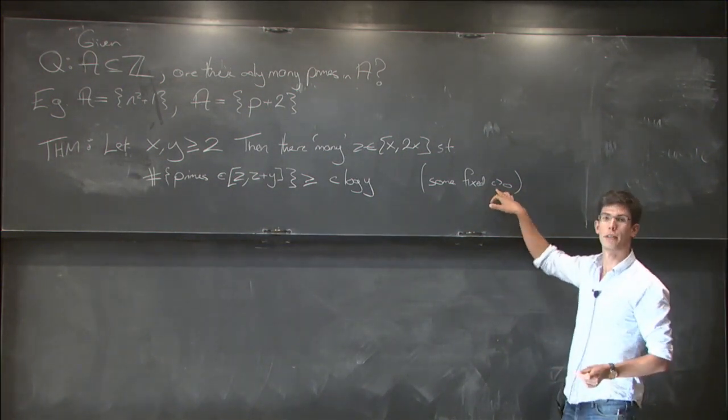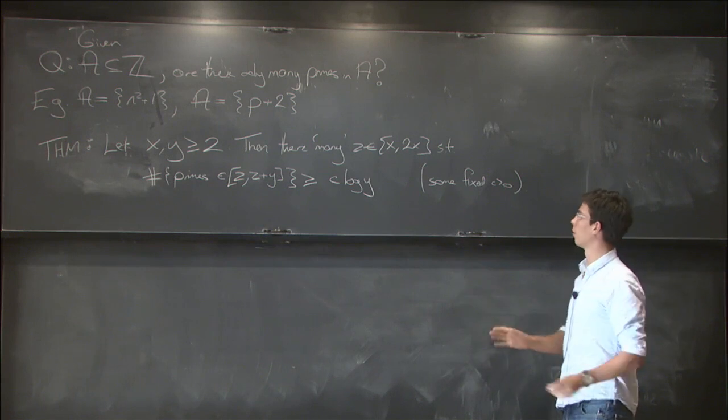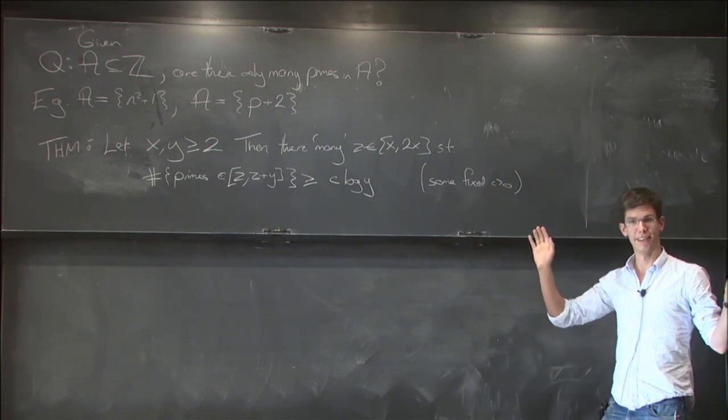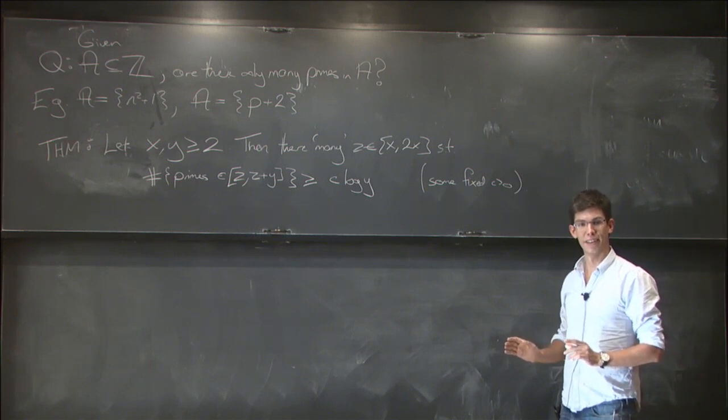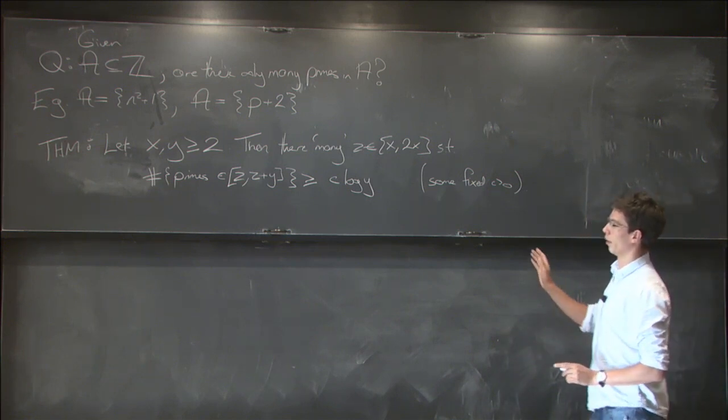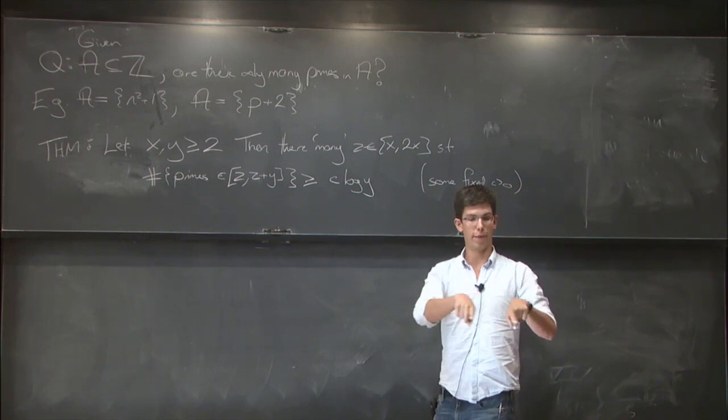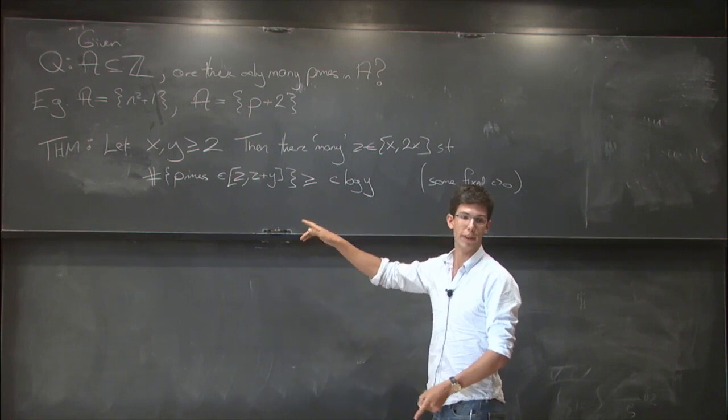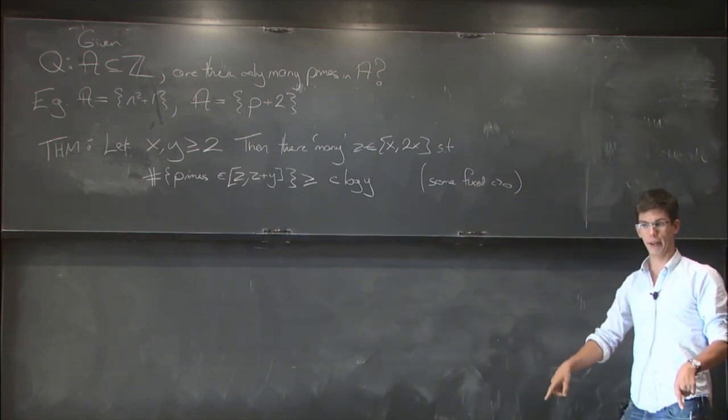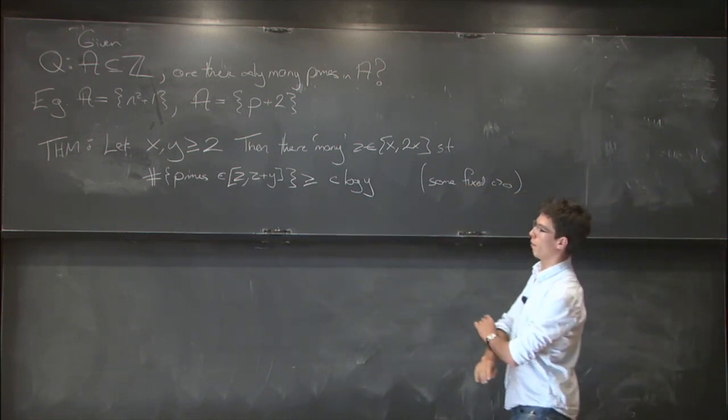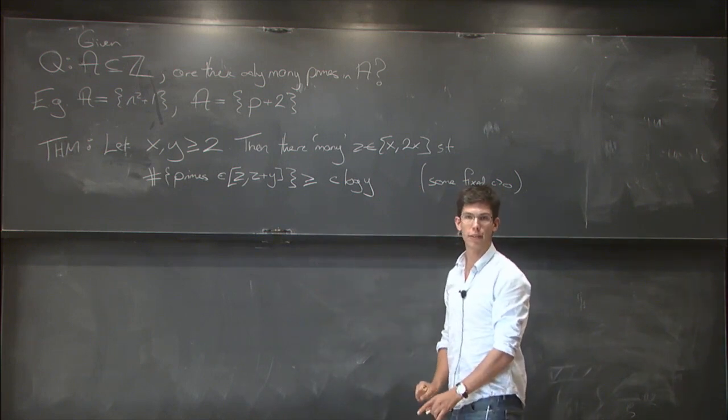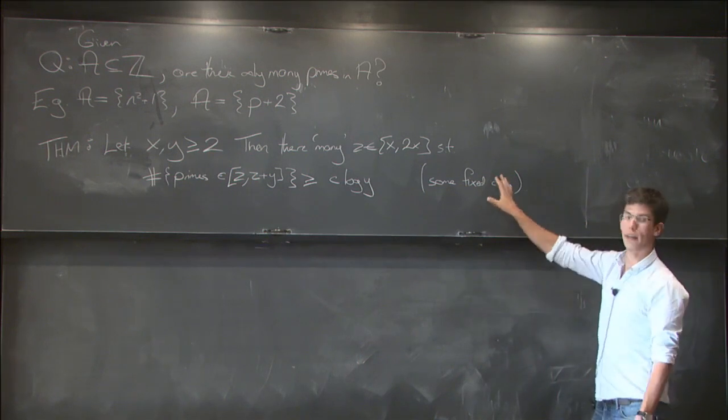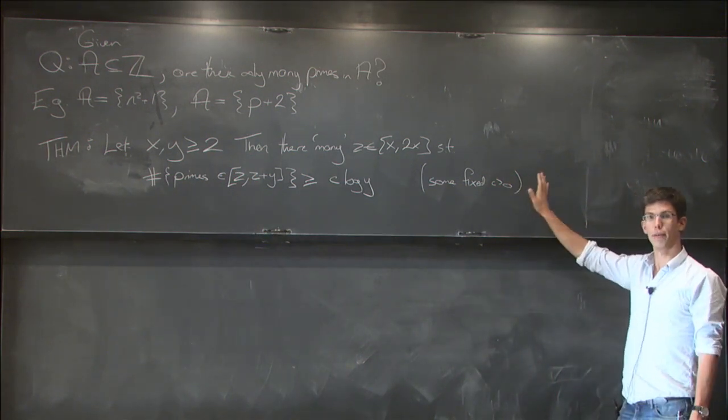No, so there exists some universal fixed globally constant c, so think of c as being 10 to the power minus 10 or something. So it's not like 1 minus epsilon? No, so I mean if you care very much about bounded gaps between primes, then you can be more careful for precisely when these thresholds are for when you get 2 primes and things like this. But if you want a nice uniform version like this that works for any choice of parameters, then just think of c as some tiny absolute fixed constant.